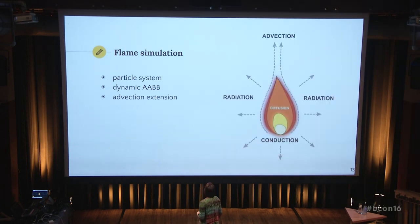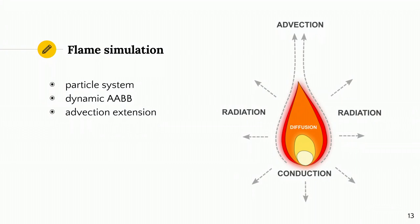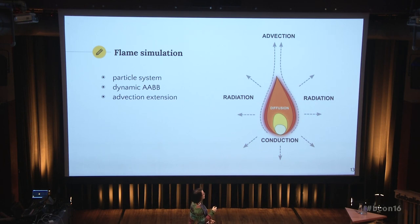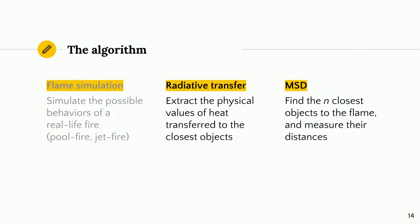As you can see, heat is transferred in four different components. Conduction and diffusion can be omitted for the purpose of our simulation. Advection can be treated as this bounding volume extension. The dominating component is, in fact, radiation, and it is computed in the second part of the algorithm.